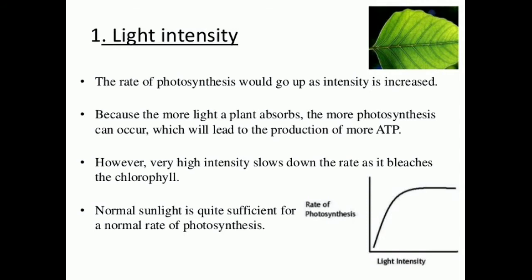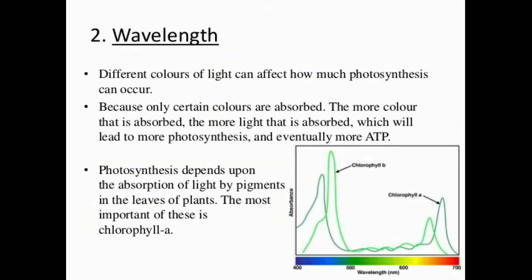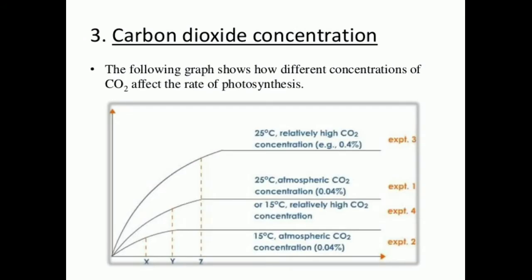The next important factor is wavelength. Different colors of light affect how much photosynthesis occurs because only certain colors are absorbed. The more colors that are absorbed, the more light energy is captured, leading to more photosynthesis and eventually more ATP. Photosynthesis depends upon the absorption of light by pigments in the leaves of plants, the most important of which is chlorophyll.